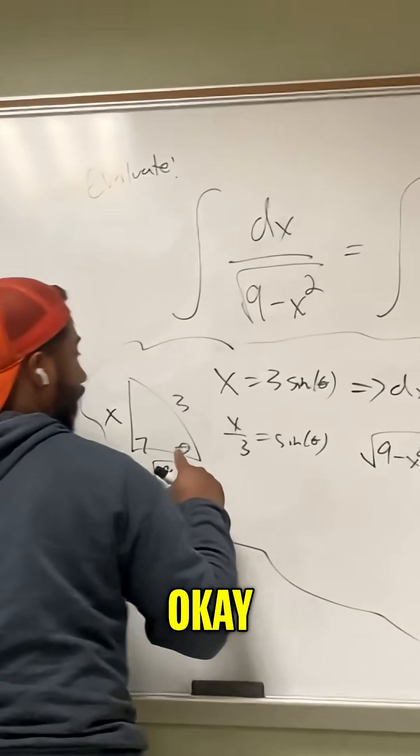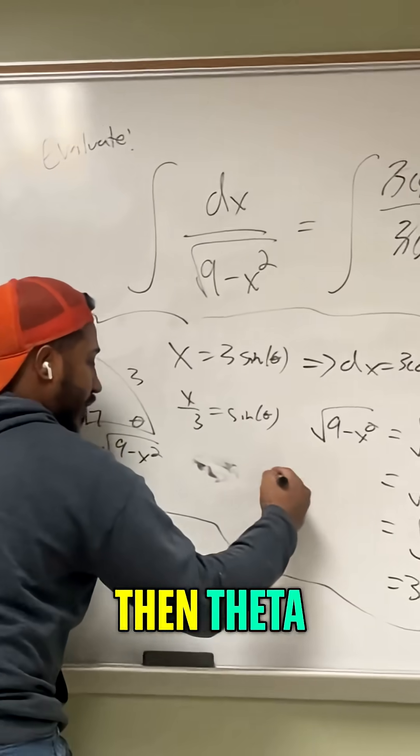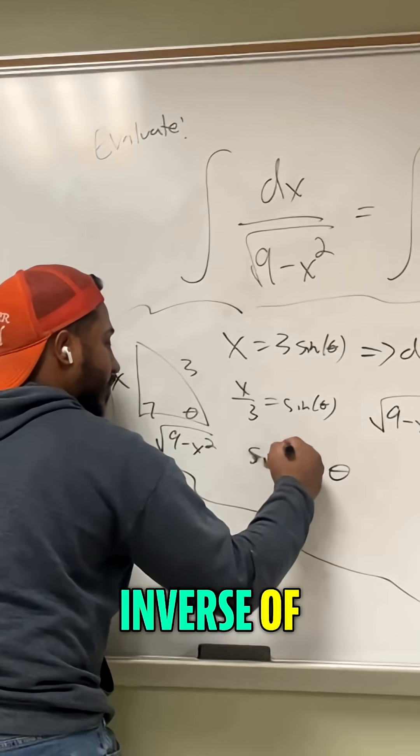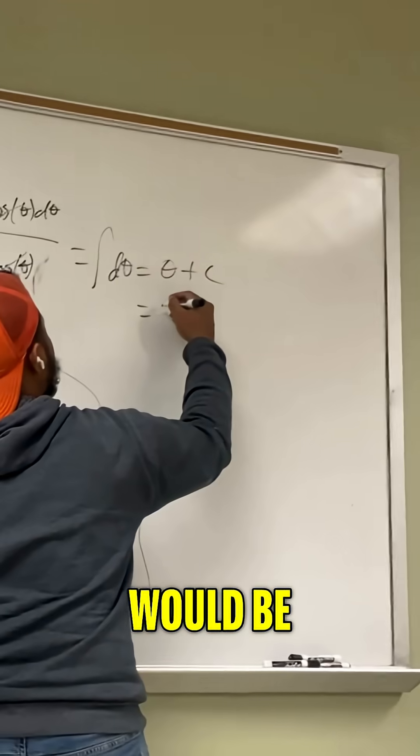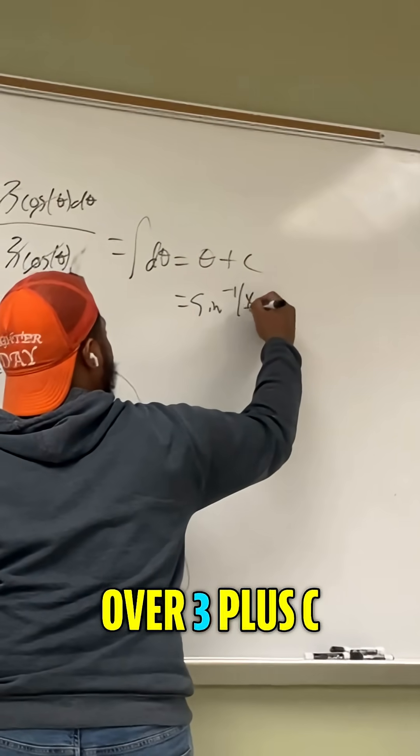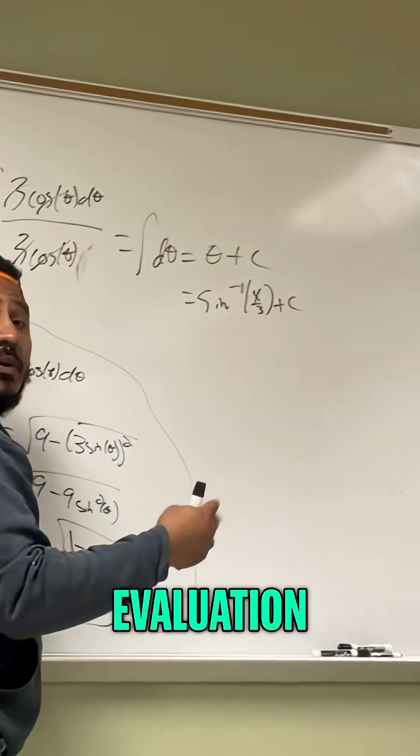Now we go back to our original where we know if x over 3 equals sine of theta, then theta would equal the sine inverse of x over 3. So that would be sine inverse of x over 3 plus c, the evaluation of this integral.